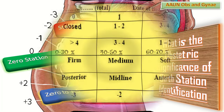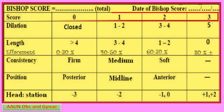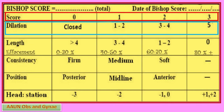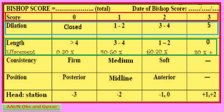Bishop's score calculation: Dilatation scores — 0 for closed, 1 for 1–2 cm, 2 for 3–4 cm, 3 for 5 cm or more. Cervical length scores — 0 for more than 4 cm, 1 for 3–4 cm, 2 for 1–2 cm, 3 for 0 cm. Effacement scores — 0 for 0–30%, 1 for 40–50%, 2 for 60–70%, 3 for 80% or more.